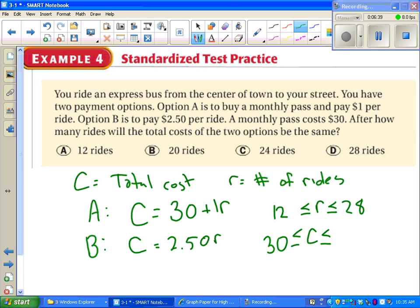To go 28 rides using the first option, that would be 58. 30 plus 28 is 58. Or I could do option B, 2.5 times 28 is 70. So my biggest possible cost is $70.